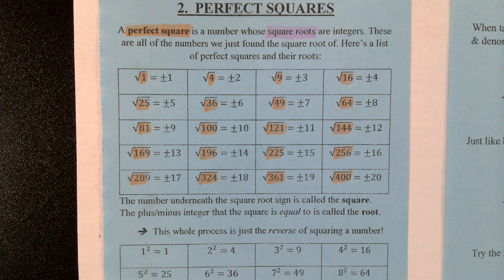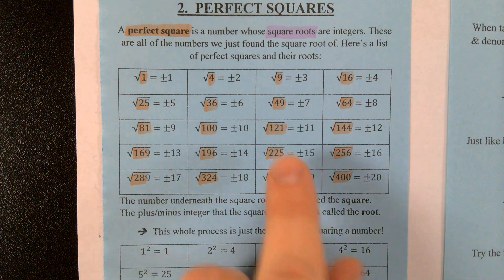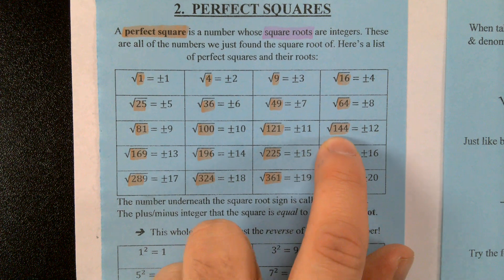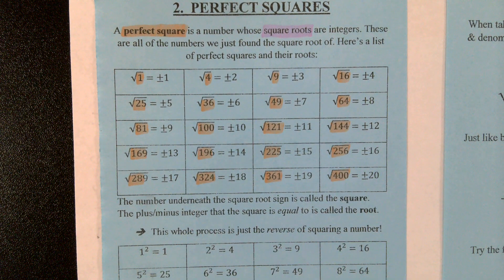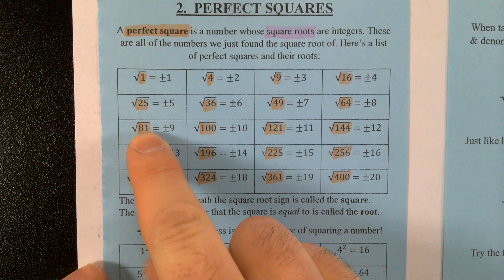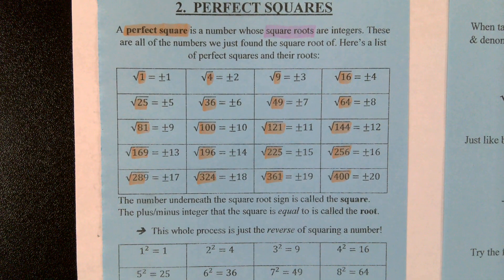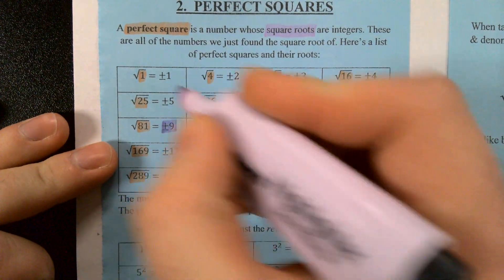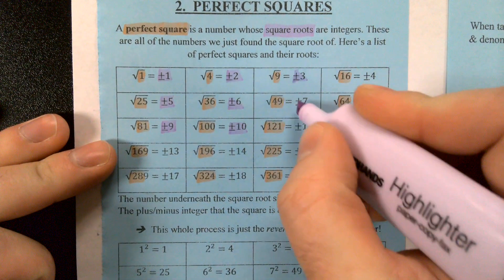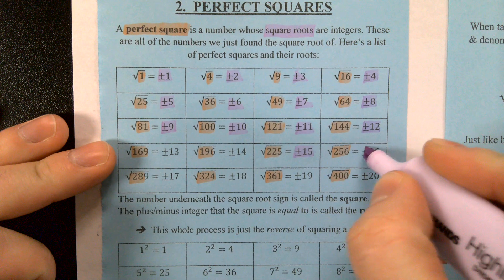These are all numbers we're familiar with because we knew those warm-up questions like the back of our hand. We knew 5 times 5 was 25, 11 times 11 was 121, and 12 times 12 was 144. What we're not familiar with is undoing them — doing the reverse of what we're typically used to doing. Now instead of multiplying 9 times 9 to get 81, we're going to take the square root of 81 and get plus or minus 9. That plus or minus 9 is the square root.